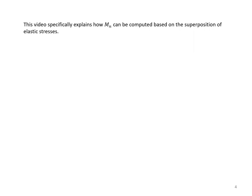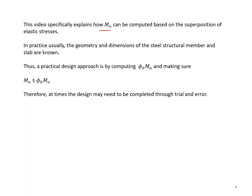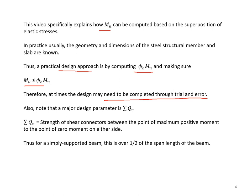This video specifically explains how MN can be computed based on the superposition of elastic stresses. In practice, the geometry and dimensions of the steel structural member and slab are usually known. Therefore, a practical design approach is by computing phi-B times MN and making sure MU is smaller than phi-B times MN. Phi-B is a resistance reduction factor equal to 0.9. At times the design may need to be completed through trial and error.